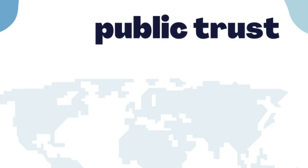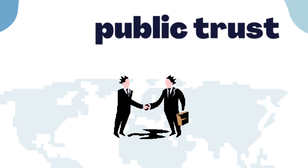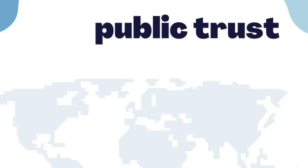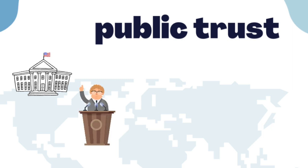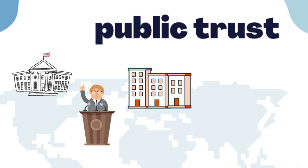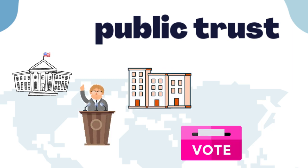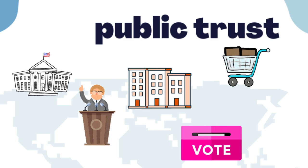The fifth objective is public trust. Adversaries may have the end goal of eroding trust in the government, elected officials, certain services, elections, or company brands.